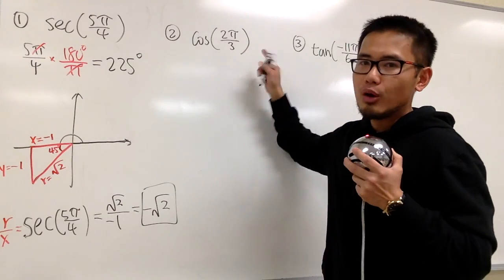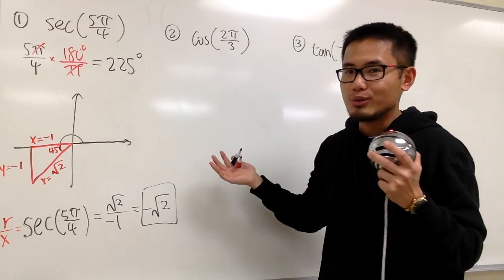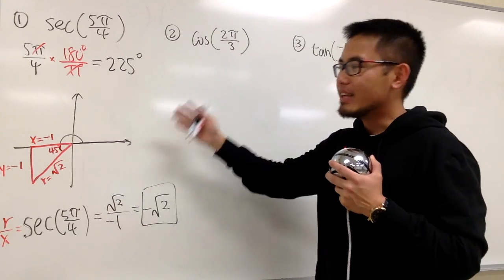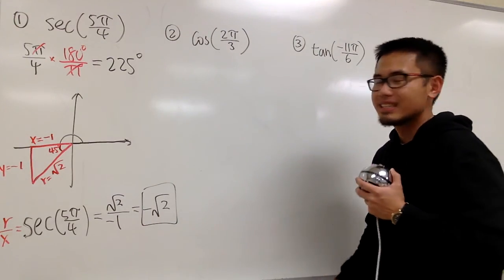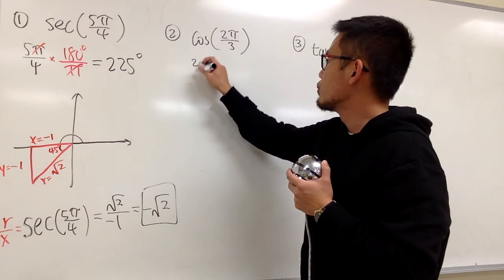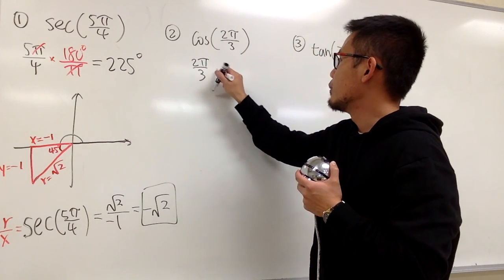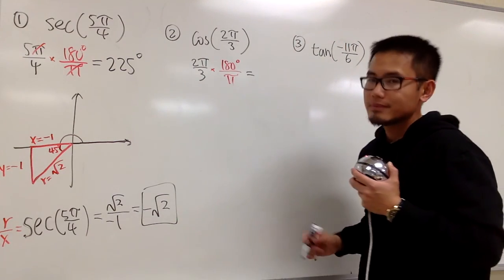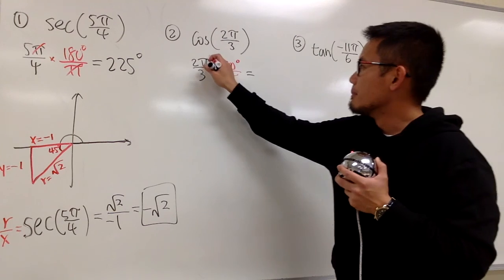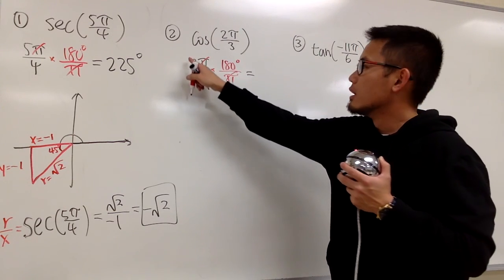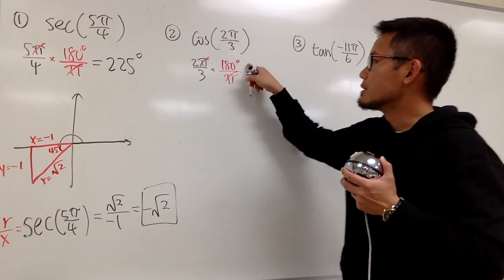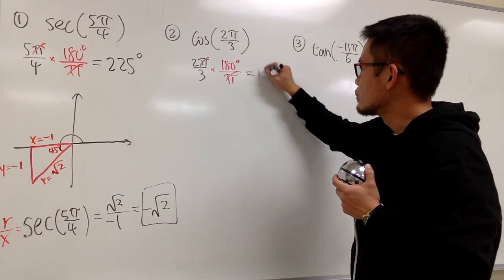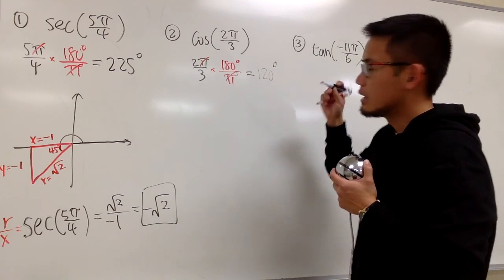Let's look at the next one. We have cosine of 2π/3. Let's do the same thing — convert this into degrees. Put down 2π/3 and multiply by 180 degrees over π. The π and π cancel. 2 times 180 is 360, divided by 3 is 120. So this is 120 degrees.